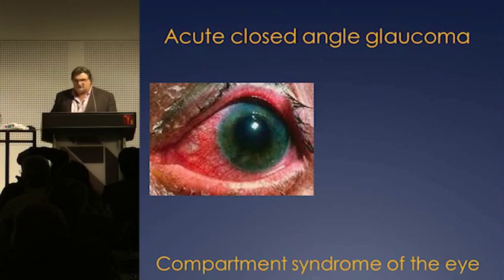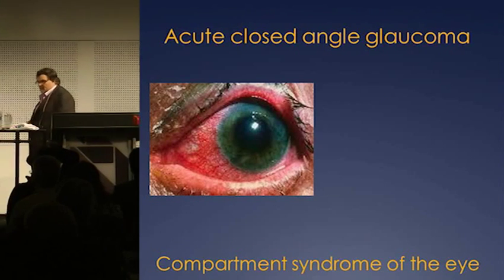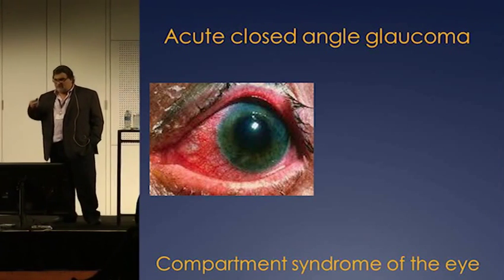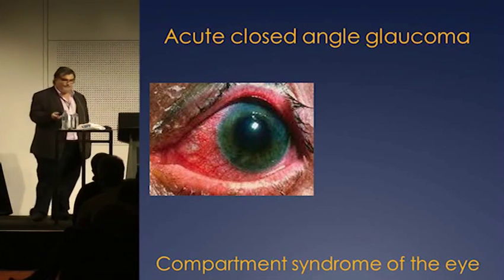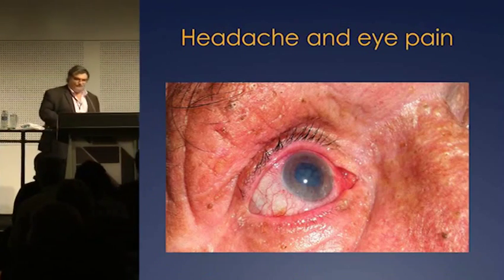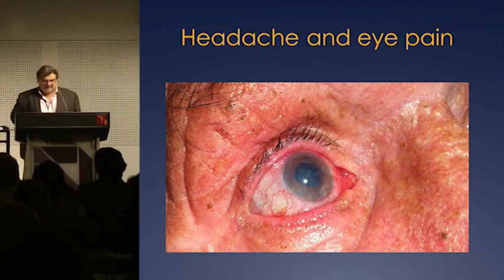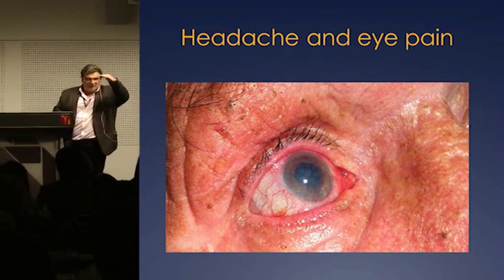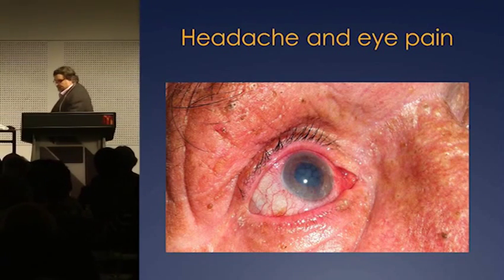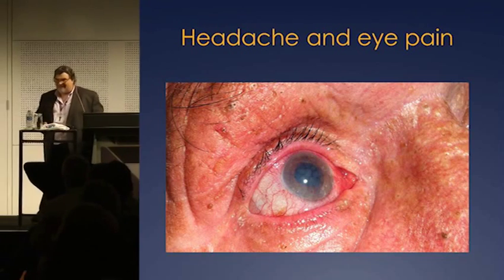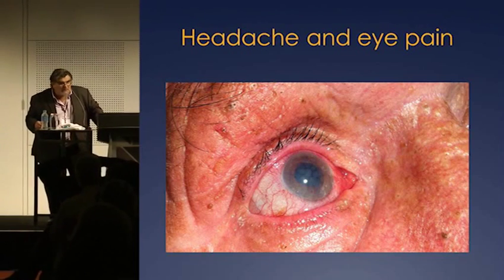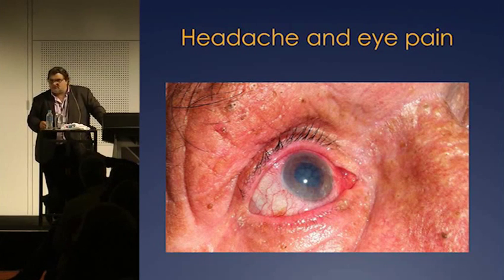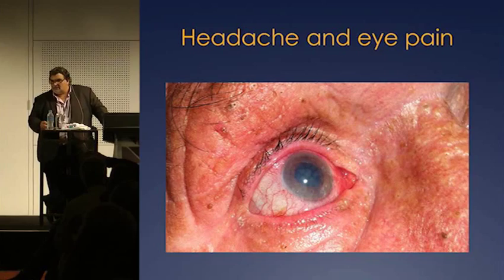This is the one I care about and the one you should care about: acute closed-angle glaucoma. We've heard of compartment syndrome — this is the compartment syndrome of the eye. I was looking at the triage list and saw a patient with headache and 'cataract.' I was writing a lecture on the red eye and glaucoma and thought, what are the chances this is actually glaucoma?